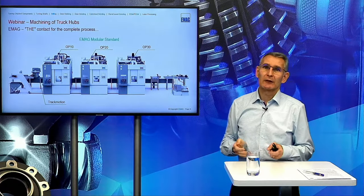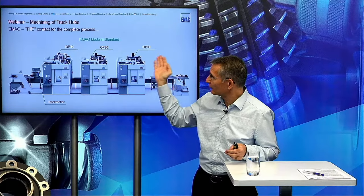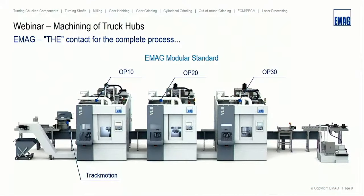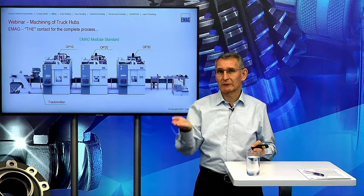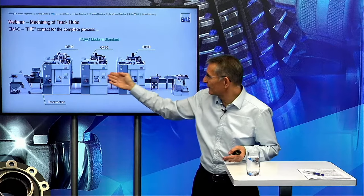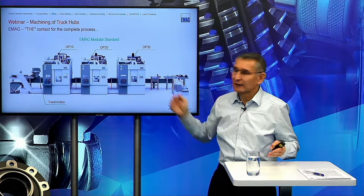Regarding our machine and automation concepts, we can start with the easiest one from our modular standard product range: the VL8 machine type, which is itself a standalone machine with the pickup principle — the machine loads and unloads the part by itself. This is used in combination with a track motion system, a gantry at one-meter height, which brings the part through the complete process and also has the ability to swivel the part 180 degrees. This allows us to easily combine machines with the track motion for a very modular production line concept.